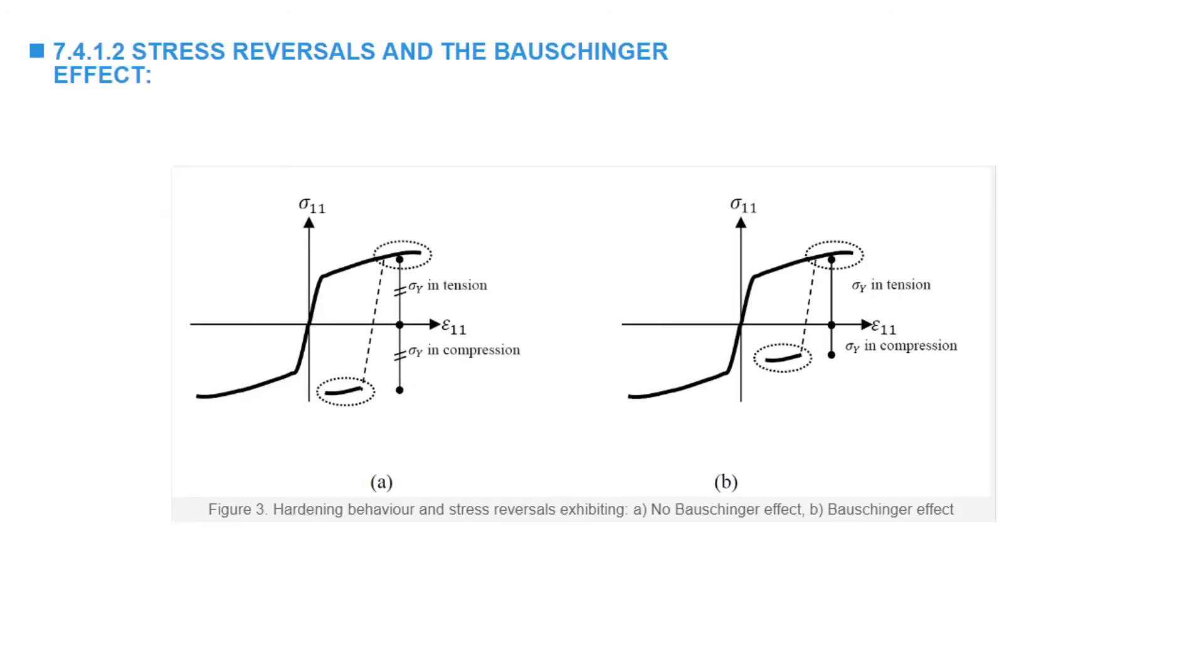An important component for the plasticity model is how metals behave upon reversal of loading in the strain hardening regions. Metals, in this regard, are divided into two classes, those exhibiting no Bauschinger effect and those exhibiting Bauschinger effect.